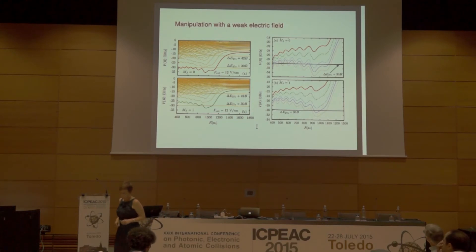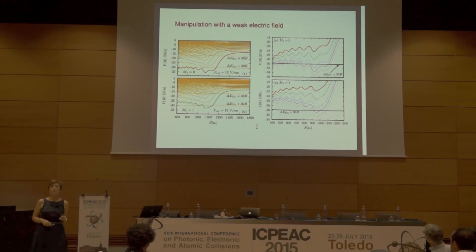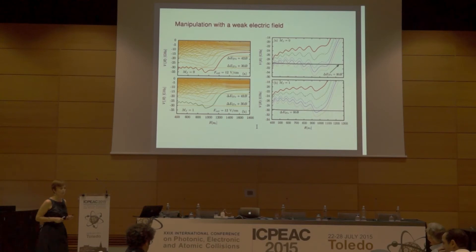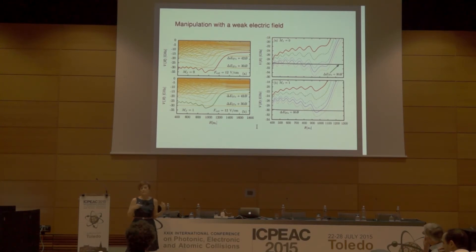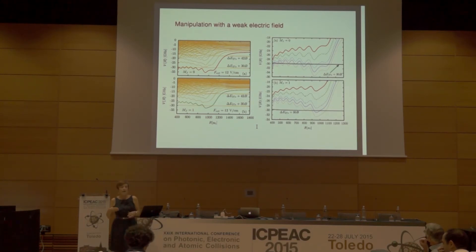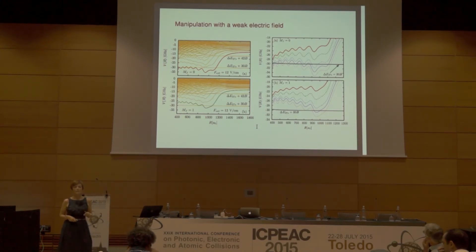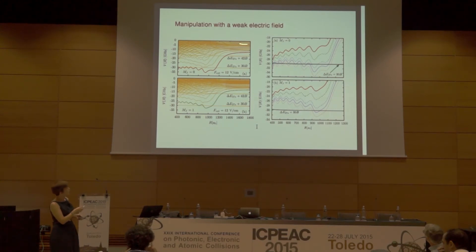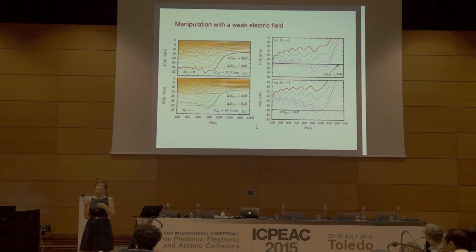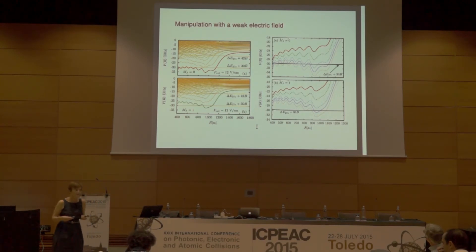One problem with this Rydberg Born-Oppenheimer potential is that it comes from the highly degenerate manifold with L greater than or equal to 3. In the laboratory, Rydberg atoms are normally produced with a two-step photon excitation: from 5S in rubidium, they excite to some P state, and then absorbing another photon, they go either to an S or D state. So this degenerate manifold is hard to achieve experimentally. In order to facilitate that process, what we did was include a very weak electric field so that the degenerate manifold acquires some D-state character, enabling creation of this system in the laboratory.